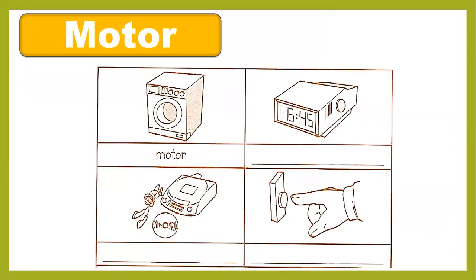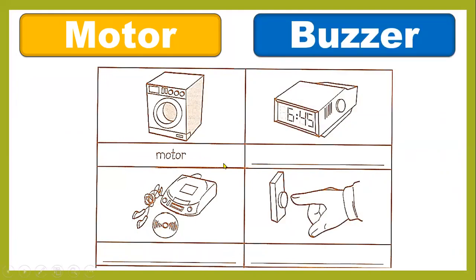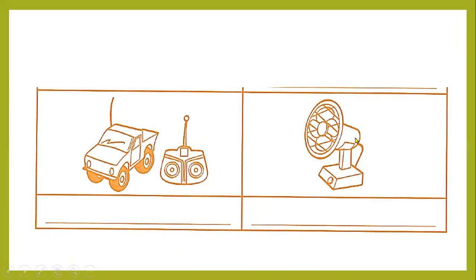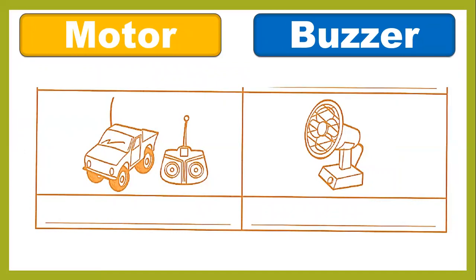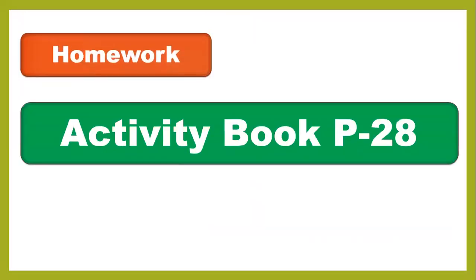Here are the activity examples. A washing machine has a motor that makes things move. An alarm clock is a buzzer. A CD player has a motor that makes the CD spin. A doorbell makes things sound, so it is a buzzer. A fan is a motor. A toy car also has a small motor inside that makes it move. Kindly complete this homework on page 28.